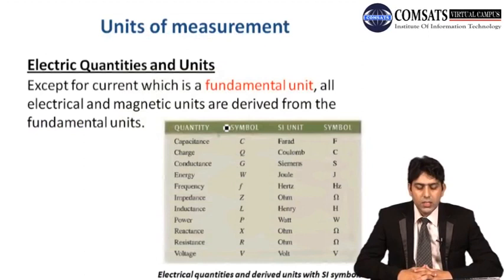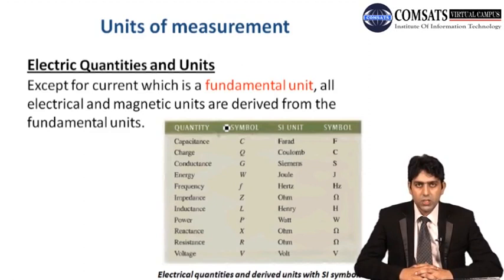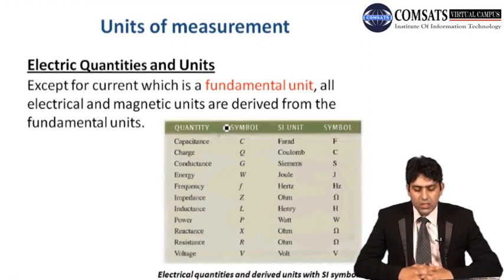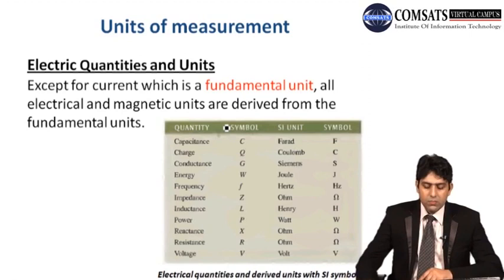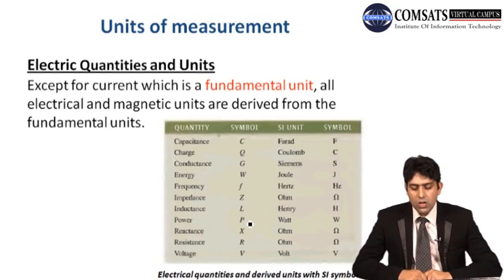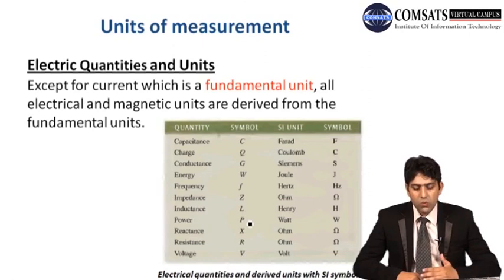Let's talk about electrical quantities and units. Except for current, which is a fundamental unit, all electrical and magnetic units are derived from the fundamental units. On the right side in the table, there are many electrical quantities and their corresponding units. For example, capacitance has symbol C, unit Farad, symbol F. Resistance has symbol R, unit Ohm, symbol Ω. Energy has symbol W, unit Joule, symbol J. Different electrical quantities, their symbols, their units, and the symbols of those units are shown in this table.